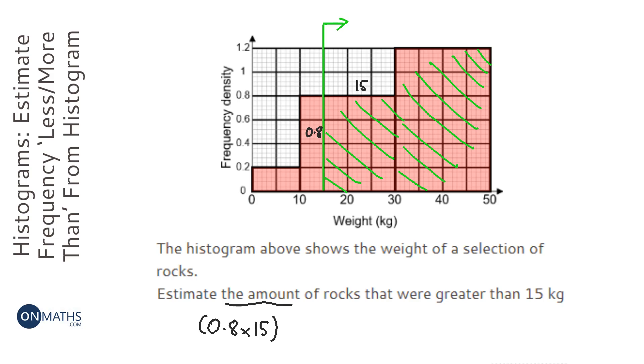This second rectangle has a class width of 20, reading from the bottom, and its height is 1.2. So to work out the frequency again, we're just going to times them together.